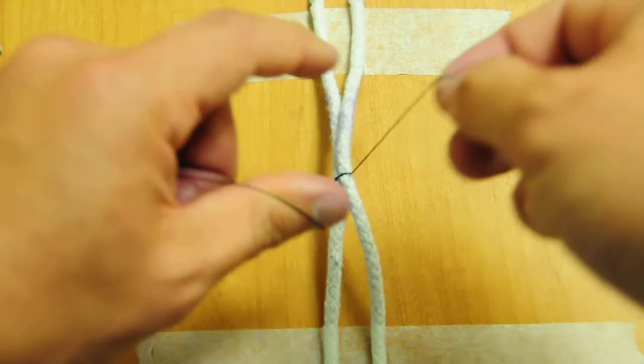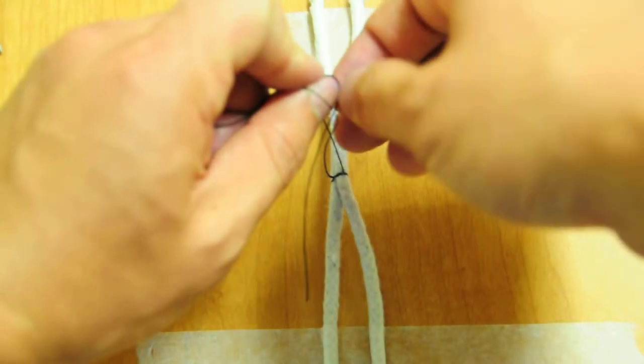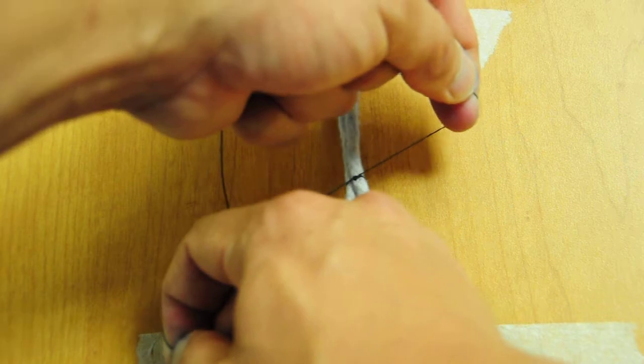So thumb under, close the loop, come to the other side, push through. Always cross your hands to lay flat if you can.